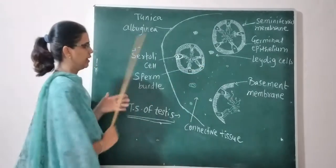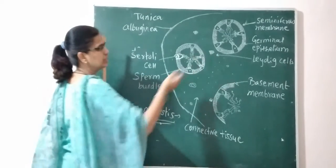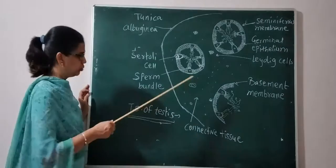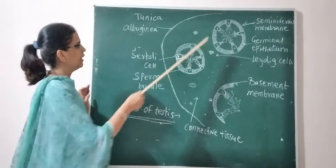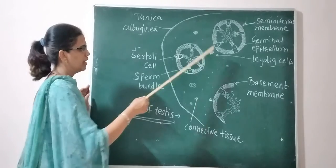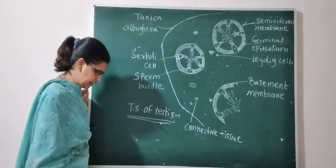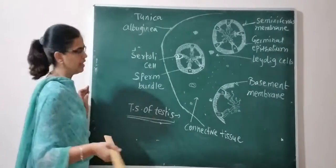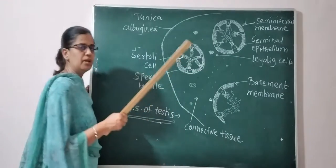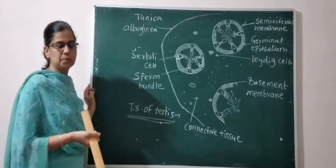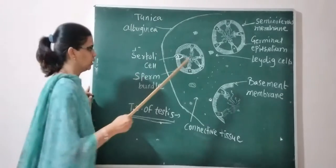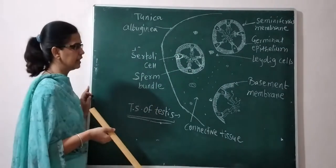There are Leydig cells found in the seminiferous tubules, also called interstitial cells. They secrete the male hormones — predominantly testosterone.